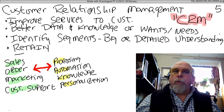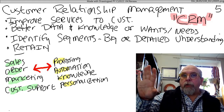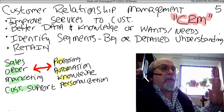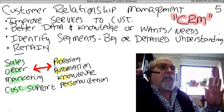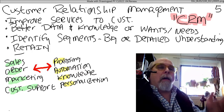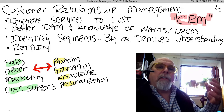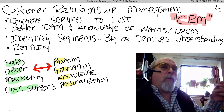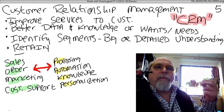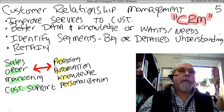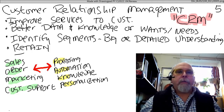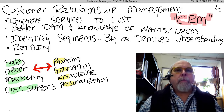In addition to supply chain — which is one side of the business, making sure we get the stuff where we can sell it — we also need to deal with the customer side of things. Customer relationship management software, or CRM, is all about how do we improve our services to customers? How do we get them the stuff they want when they want it? It's going to take having a much better collection of data and knowledge of what a customer wants and needs.